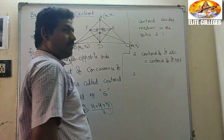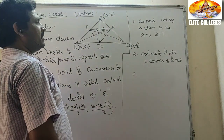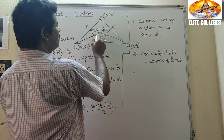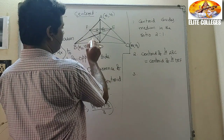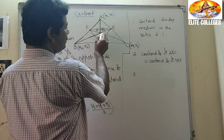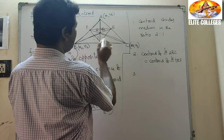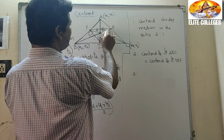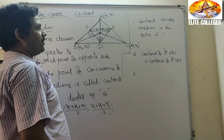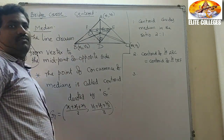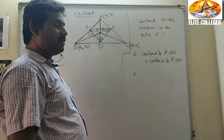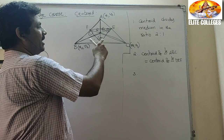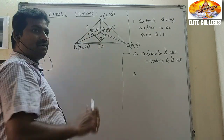The next property: the medians divide the triangle into three parts — triangle AGB, triangle BGC, and a third part. I want to discuss the area of triangle ABC and the relation between the area of triangle DEF. Looking at the figure, there are four parts.